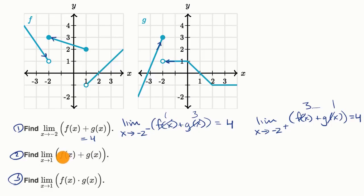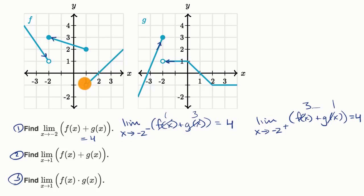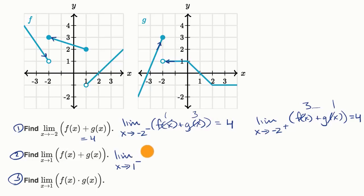Now let's do the next example: the limit as x approaches one. We'll do the exact same exercise. If you look at the individual limits for f of x from the left and the right as we approach one, this limit doesn't exist — but the limit as x approaches one of the sum might still exist, so let's try that out.